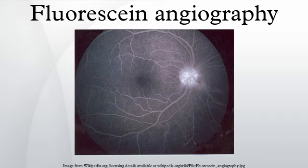Among common ophthalmologic diseases, fluorescein angiography can detect diabetic retinopathy, vein occlusions, retinal artery occlusions, edema of the optic disc, and tumors. Additionally, the transit time can provide an objective measurement of the rate of blood flow through the imaged blood vessels.